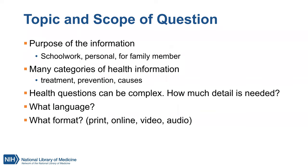It can be helpful to know the purpose of the information, though that might feel too personal for the situation, so don't feel like you need to ask if it doesn't feel right. There are many categories of health information, including treatment, prevention, and causes. Asking about which category a patron needs can help you narrow your search. For example, you might say, 'Okay, so you're looking for information about diabetes — what type would be helpful? Treatment, prevention, living with, or something else?'